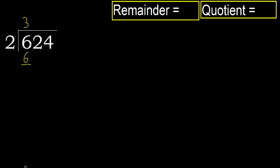Subtract: 6 minus 6 is 0. Next, eliminate the 0 here. Bring down the 2.